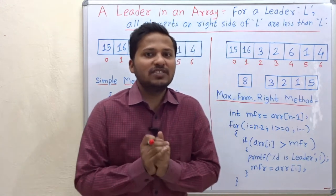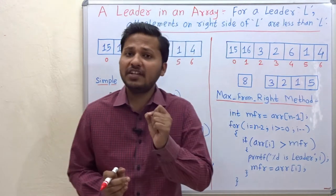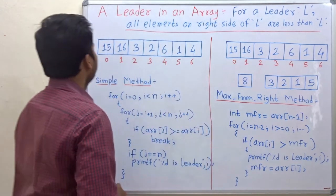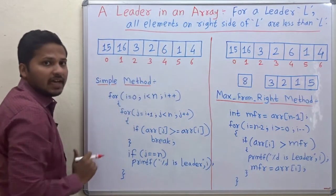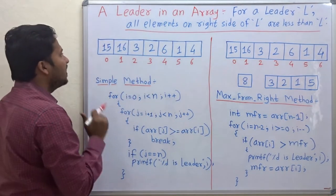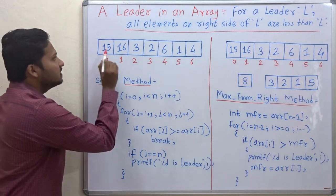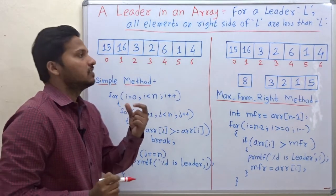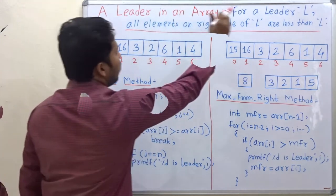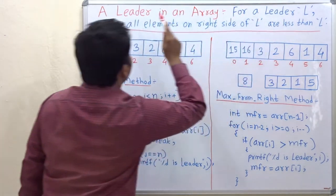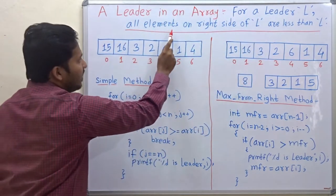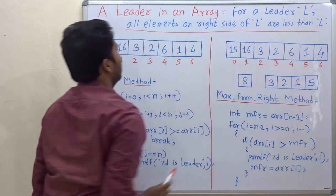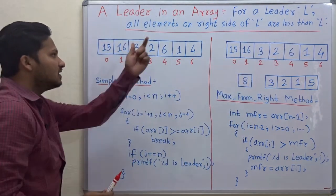Hello friends, today we are going to see how to find out the leader in an array. This is the array and now we have to find out the leaders in this array. So what is a leader? For a leader L, all elements on the right side of L are less than L.